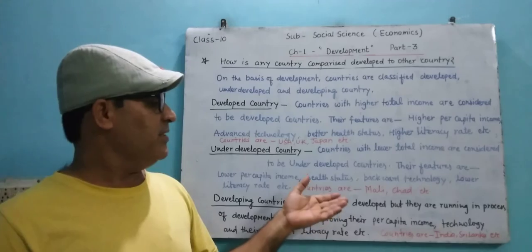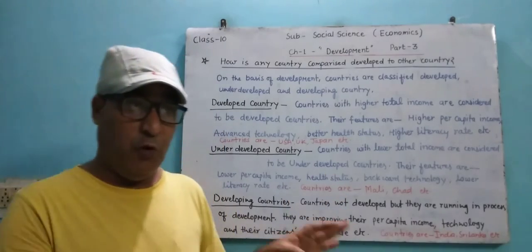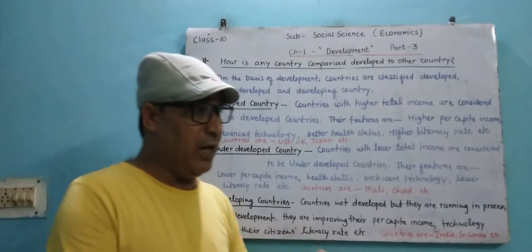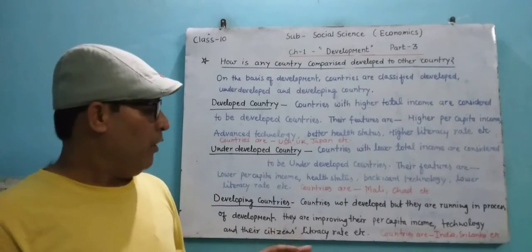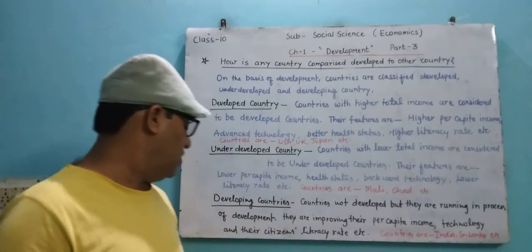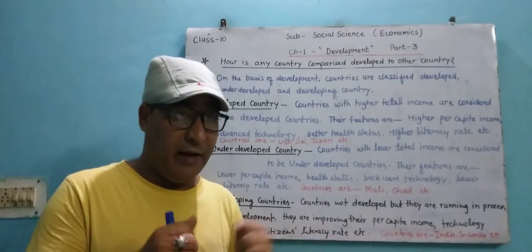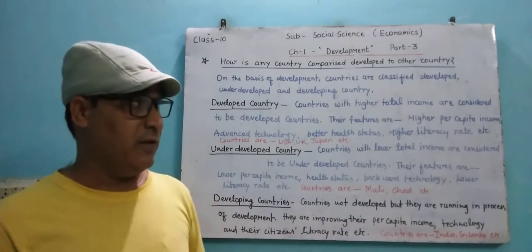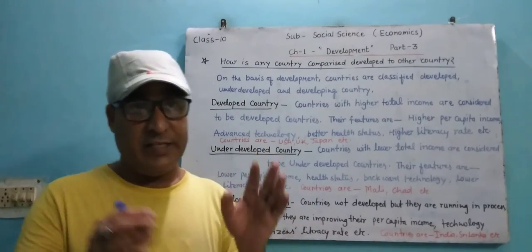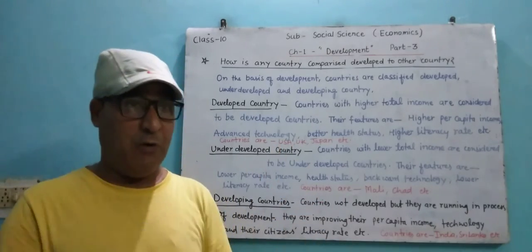Developing countries are countries that have not yet fully developed, but they are running in the process of development. Examples of developing countries include India, Sri Lanka, and many other countries. We will discuss developed, underdeveloped, and developing countries more in the next lecture.